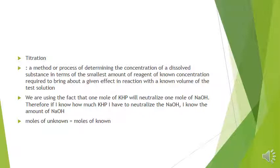This experiment uses something called titration — it's a method of determining the concentration of a dissolved substance in terms of the smallest amount of reagent of known concentration required to bring about a given effect in a reaction with a known volume of a test solution. The idea is that you're given a known sample and an unknown sample, and you use the known sample's relation with the unknown to figure out the amount of the unknown solution.